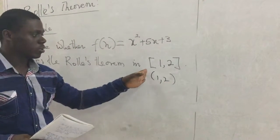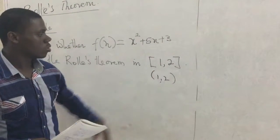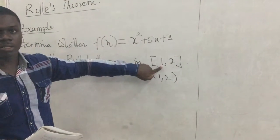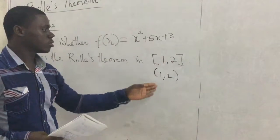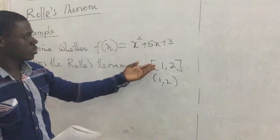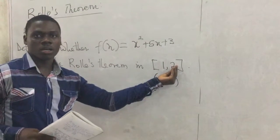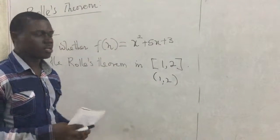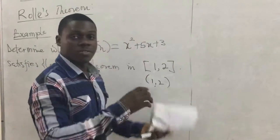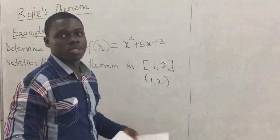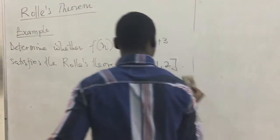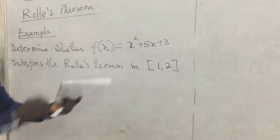The first derivative should exist within the open interval. Then the function value at the first point of the interval should be the same as the function value at the second point. If that is the case, then we say there exists a certain x-naught such that the first derivative of the function at x-naught equals zero.